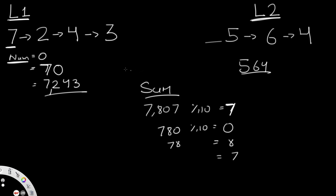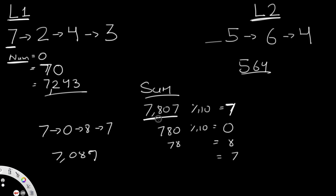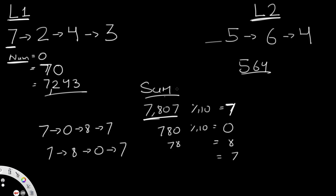The problem is, if we add digits in that order, we get seven pointing to zero pointing to eight pointing to seven — which is 7087, not 7,807. So what we're going to do is reverse it. Reversing 7087 gives us seven pointing to eight pointing to zero pointing to seven, which is 7,807 — our answer.